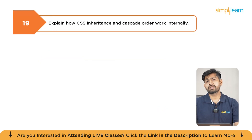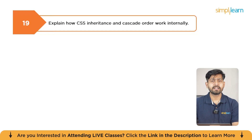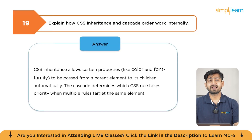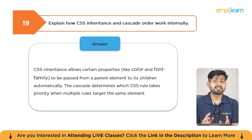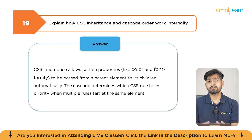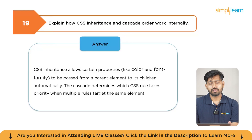How do CSS inheritance and cascade order work internally? Inheritance allows child elements to inherit styles from their parents, such as font properties. The cascade determines which rule is applied when multiple rules affect the same element, based on specificity, source order, or importance.